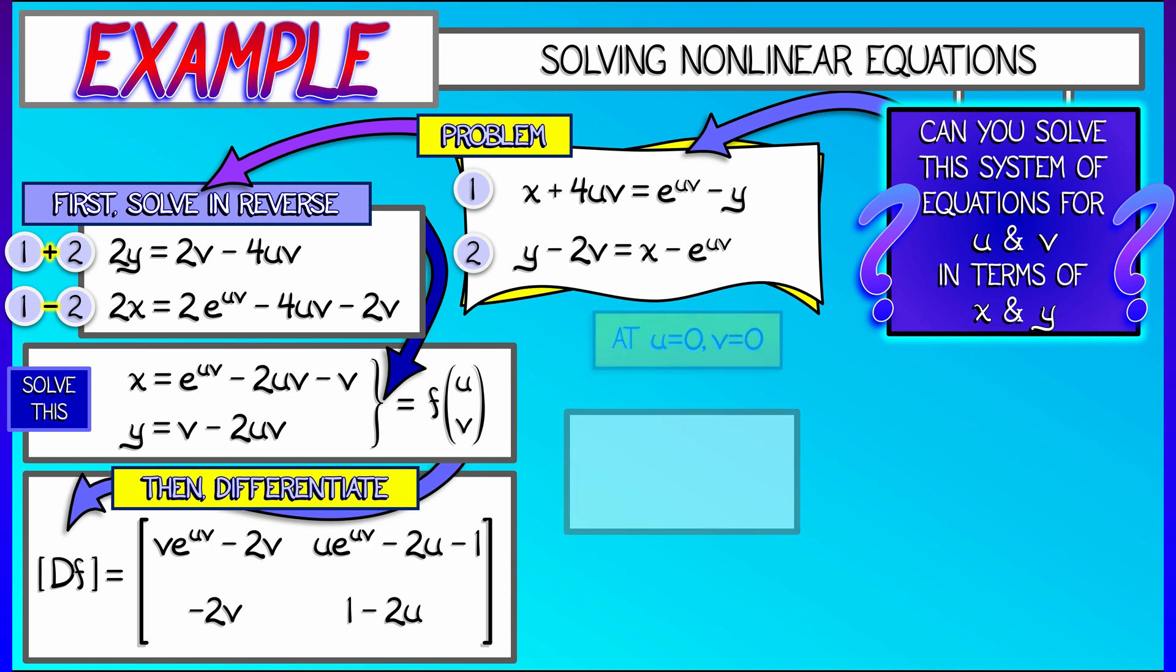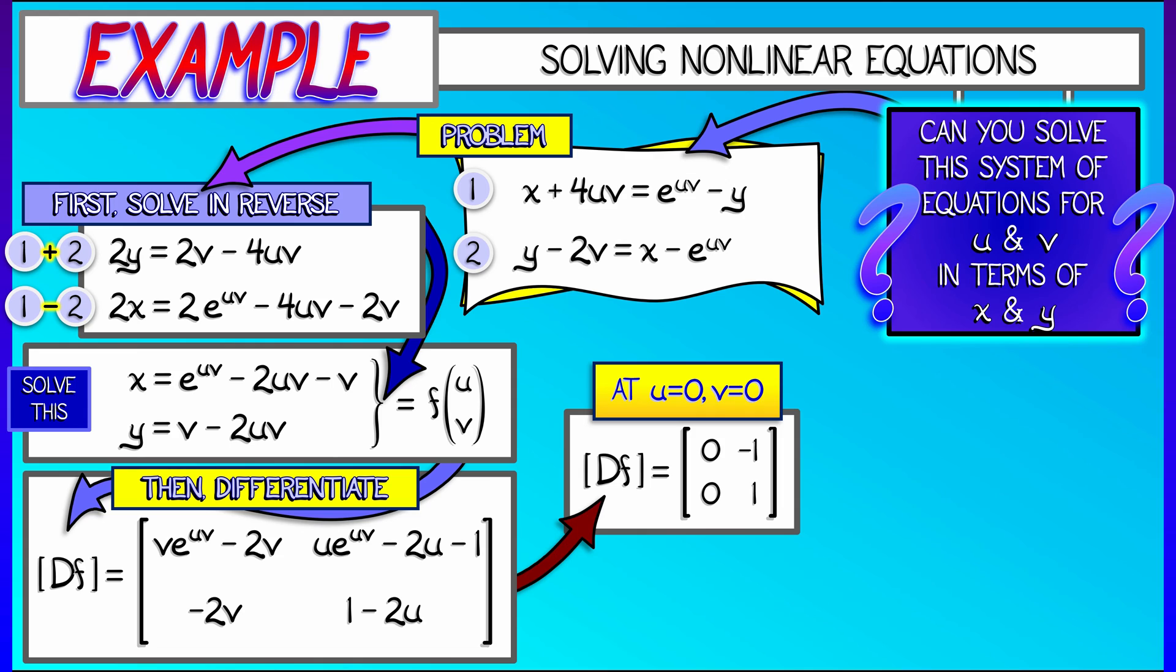Let's pick some inputs. Let's say when u is 0 and v equals 0, substituting that into this formula for the derivative, I get 0, negative 1, 0, 1. That determinant is 0. That means I'm not guaranteed to have an inverse.